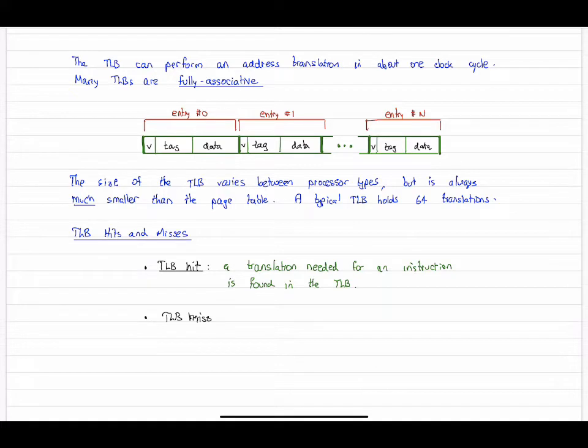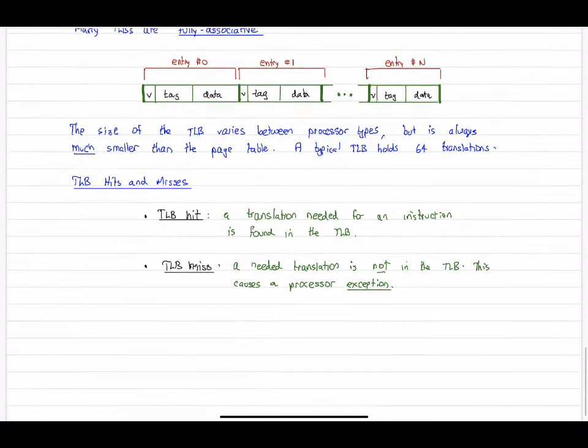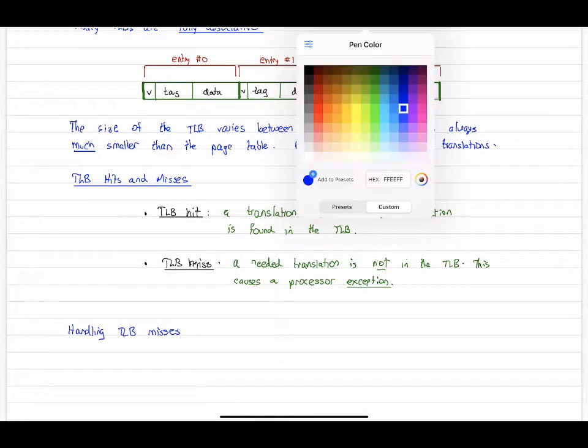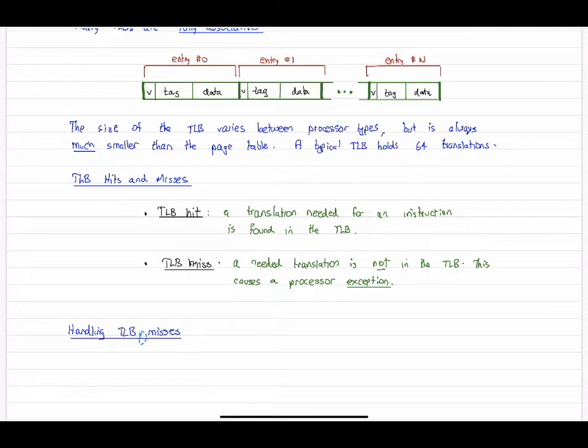Now if we have a miss, for whatever reason the translation might not be in the TLB. A needed translation is not in the TLB, so some action is going to have to be taken and the operating system is going to assist us because an exception is produced automatically on a TLB miss. The operating system kernel then is brought in to intervene.